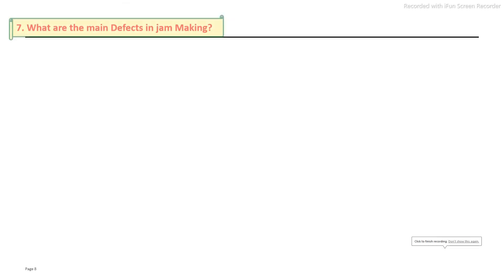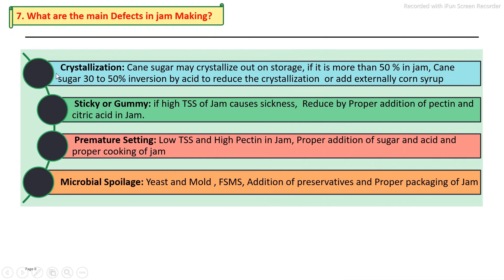What are the major defects in the jam production process? The first defect is crystallization of jam: if the proper proportion of citric acid is not added, inversion does not occur, and recrystallization takes place, causing crystallization of the jam. The second defect is sticky or gummy jam: if the final brix of the jam is too high, the jam becomes sticky and gummy. Proper proportions of citric acid and pectin must be added. Proper cooking and judging of the end point is important to maintain the quality of the product.